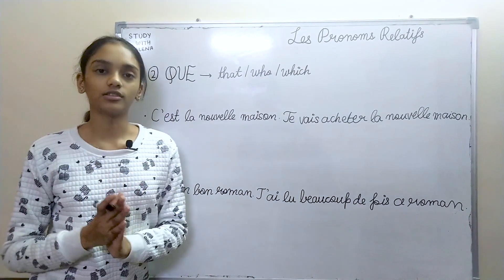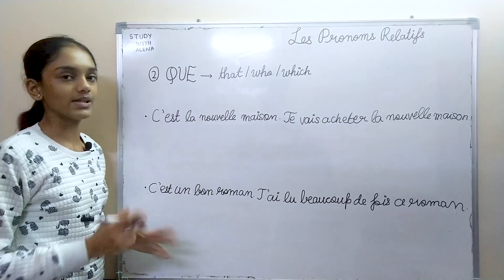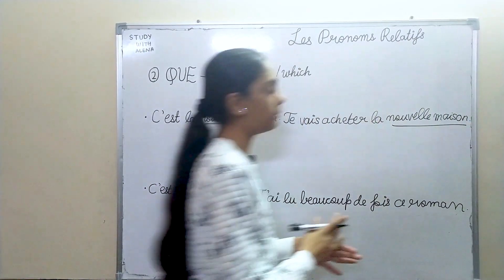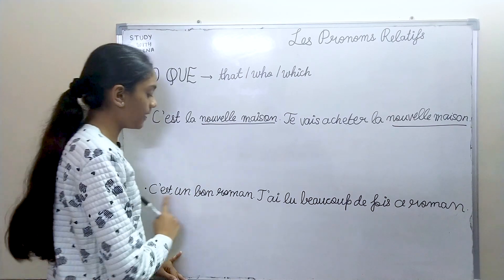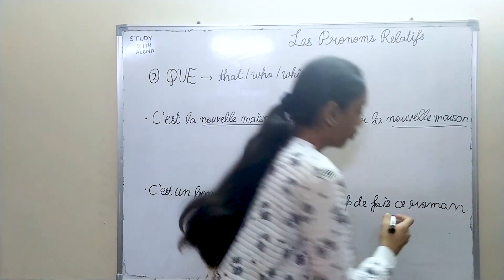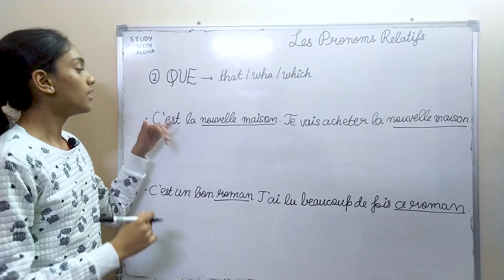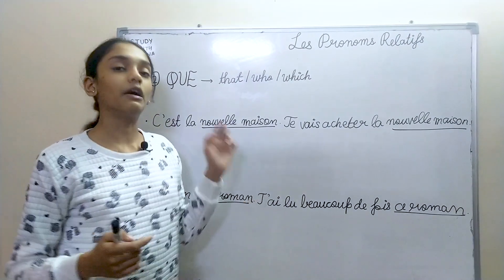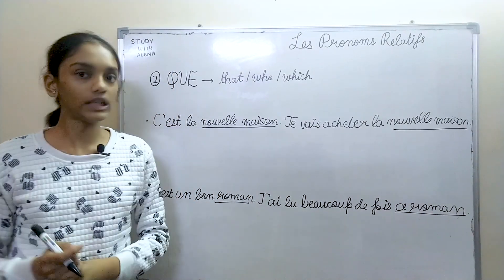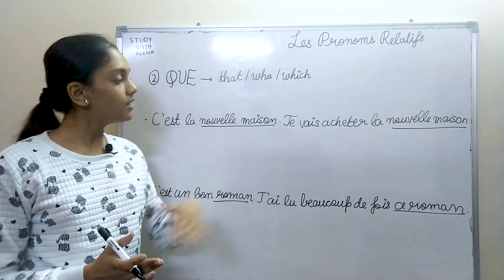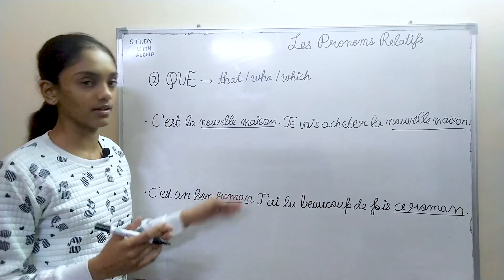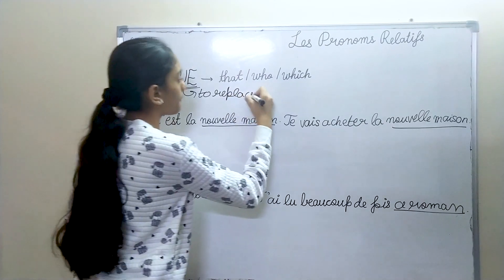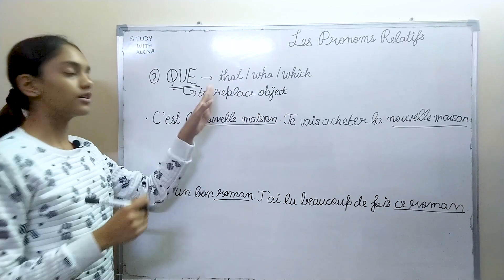Now we have que. Que also means 'that', 'who', or 'which'. In these two sentences: "C'est la nouvelle maison. Je vais acheter la nouvelle maison." — 'nouvelle maison' is repeated. And: "C'est un bon roman. J'ai lu beaucoup de fois ce roman." — 'ce roman' is repeated. In both sentences, the repeated word is not the subject — it is the object. So, we use que to replace the object.